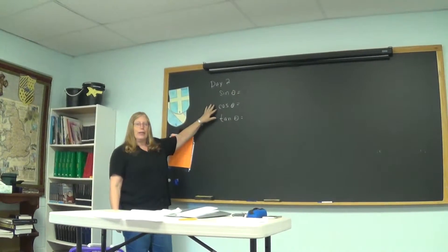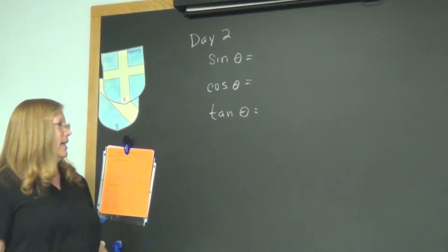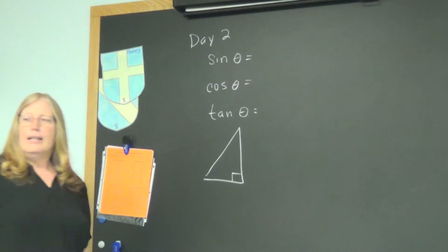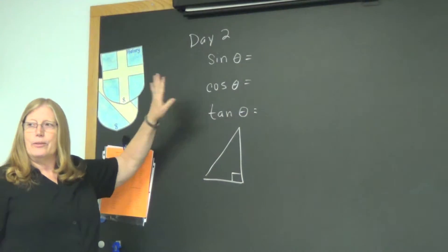So, write down the three basic trig functions. These are the most often used: sine, cosine, and tangent. They always refer to a right triangle. If you have a triangle that is not a right triangle, you may not use sine, cosine, and tangent.